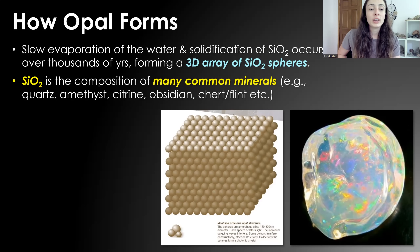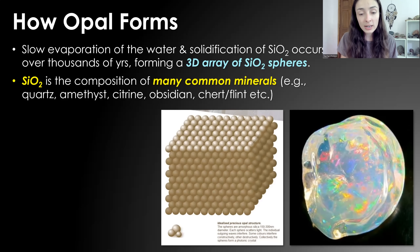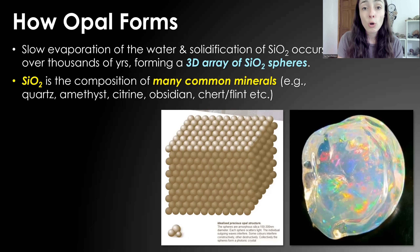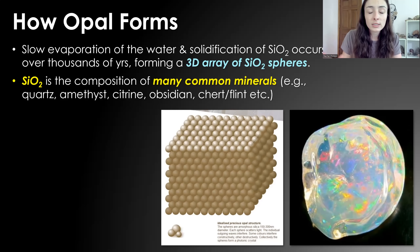Silica is the composition of many common minerals: opal, amethyst, citrine, obsidian, chert, flint, and chalcedony varieties — so many minerals and gemstones share the same composition, silicon dioxide (SiO₂). The reason it forms so many different minerals is that each type has a different crystal structure. The 3D array of silica spheres is only present in opal, whereas quartz has a different structure, obsidian has another, chert is microcrystalline, and chalcedony is a different kind of microcrystalline quartz. There are all these different structures and sizes of crystal lattices for silicon dioxide, which is why it forms so many different varieties.